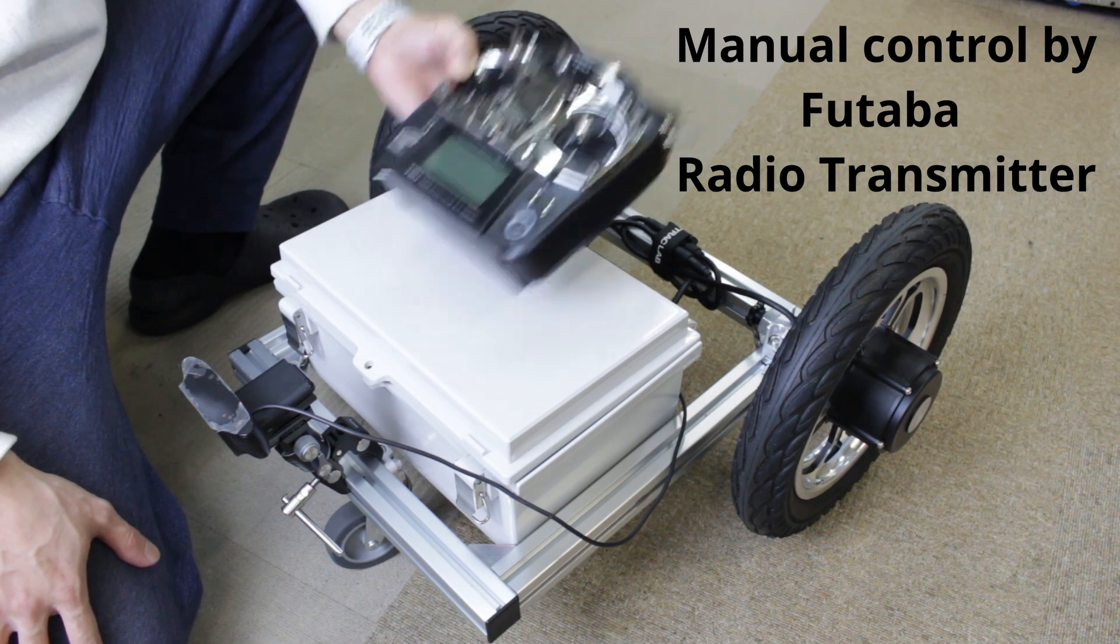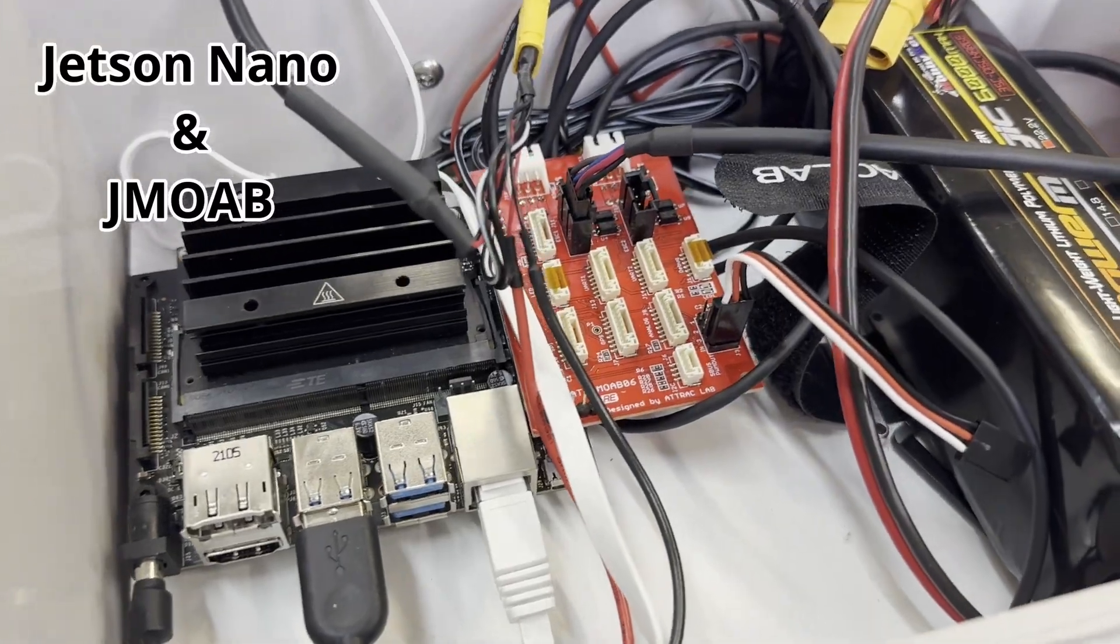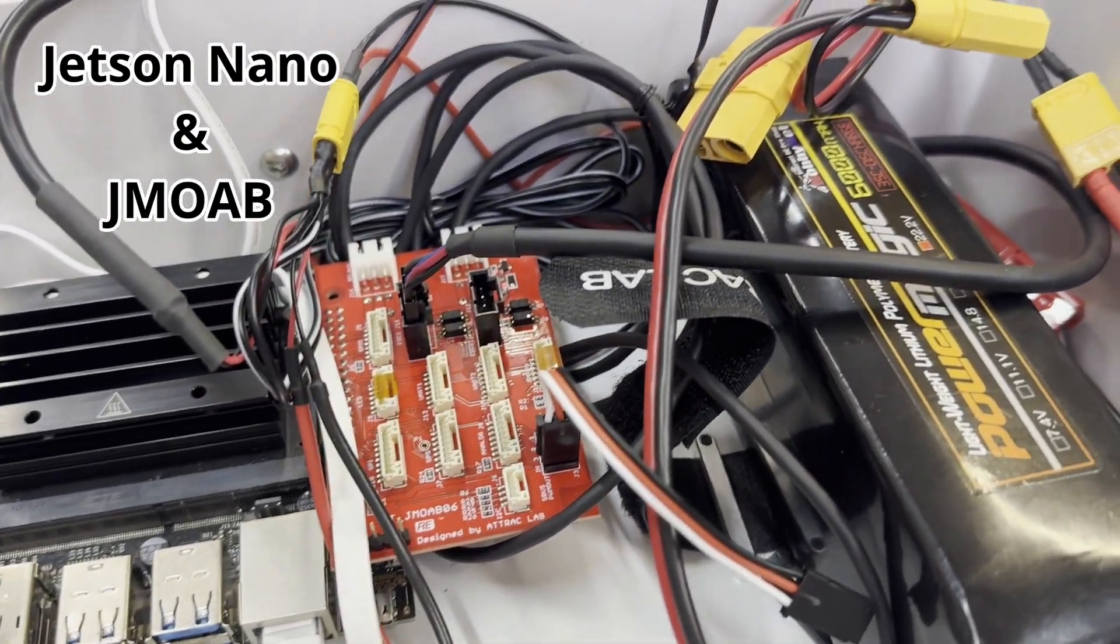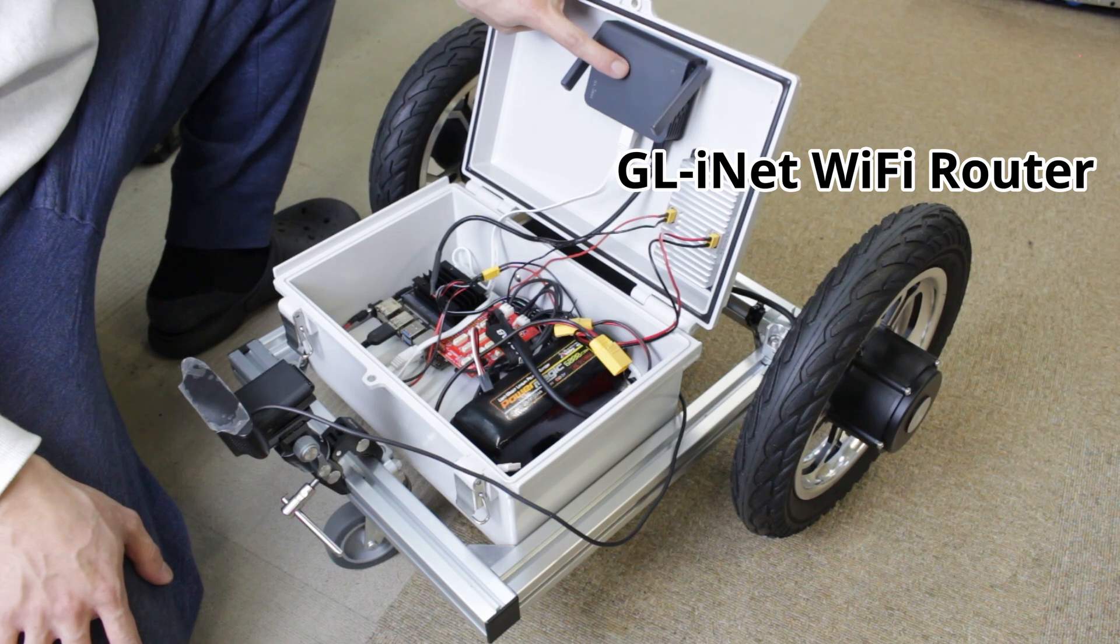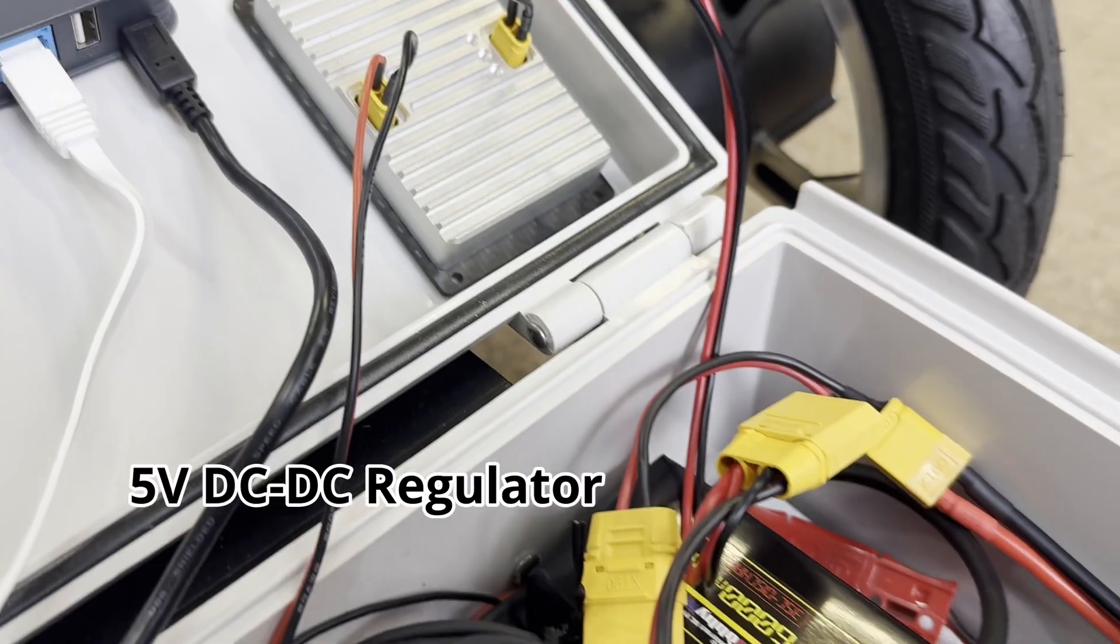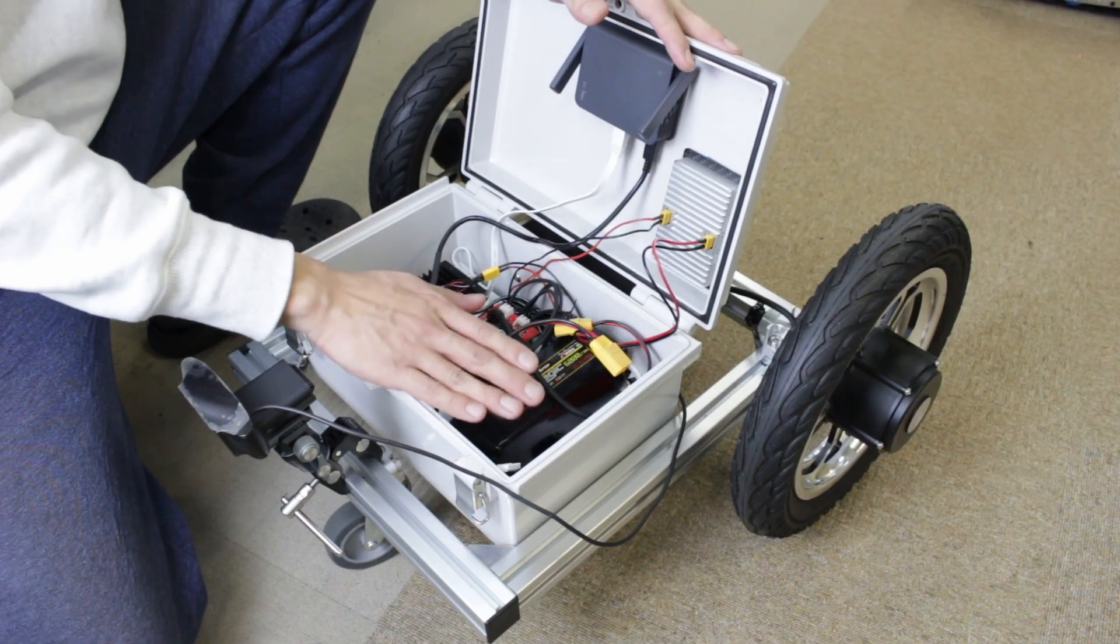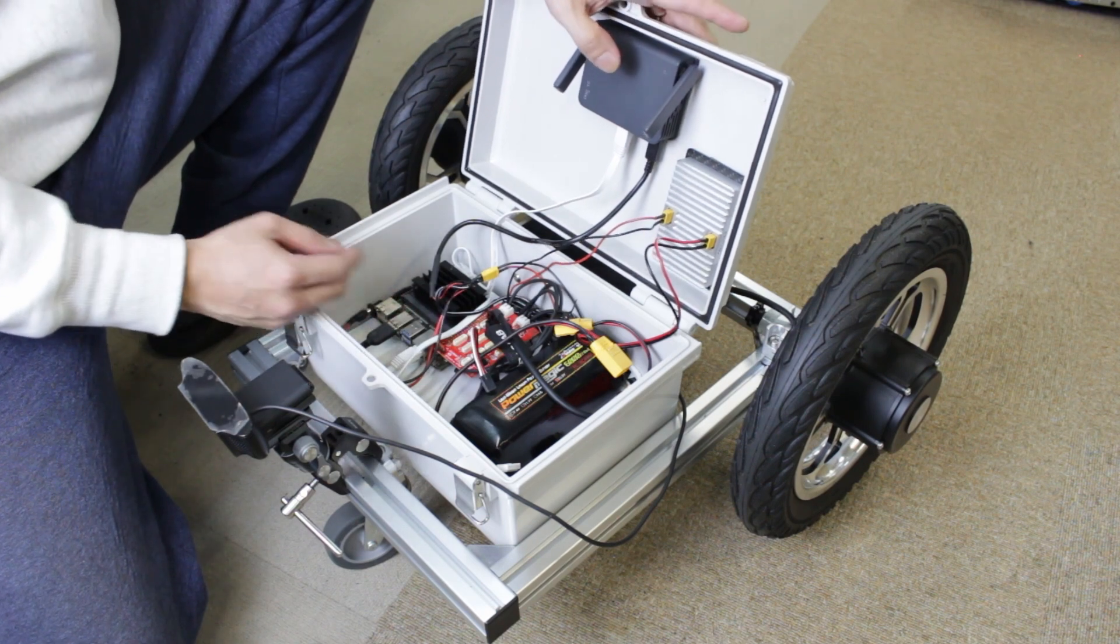We suggest using the Futaba and inside this controller box is the Jetson Nano with the JMO app. We're using this GLiNet mobile router for wireless robot development. There is a 5 volt DC-DC converter to convert the 6-cell battery into 5 volts for Jetson and the Wi-Fi router.